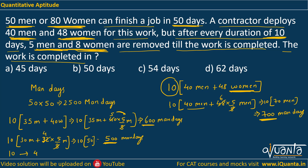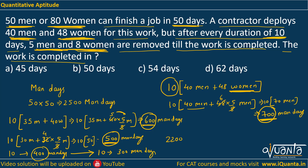Continuing the pattern: the next 10-day interval gives 400 men days, and the one after that gives 300 men days. Adding them all up: 700 + 600 + 500 + 400 = 2200 men days. Adding the final 300 men days gives a total of 2500 men days, which is exactly the total work required. So the work is completed.